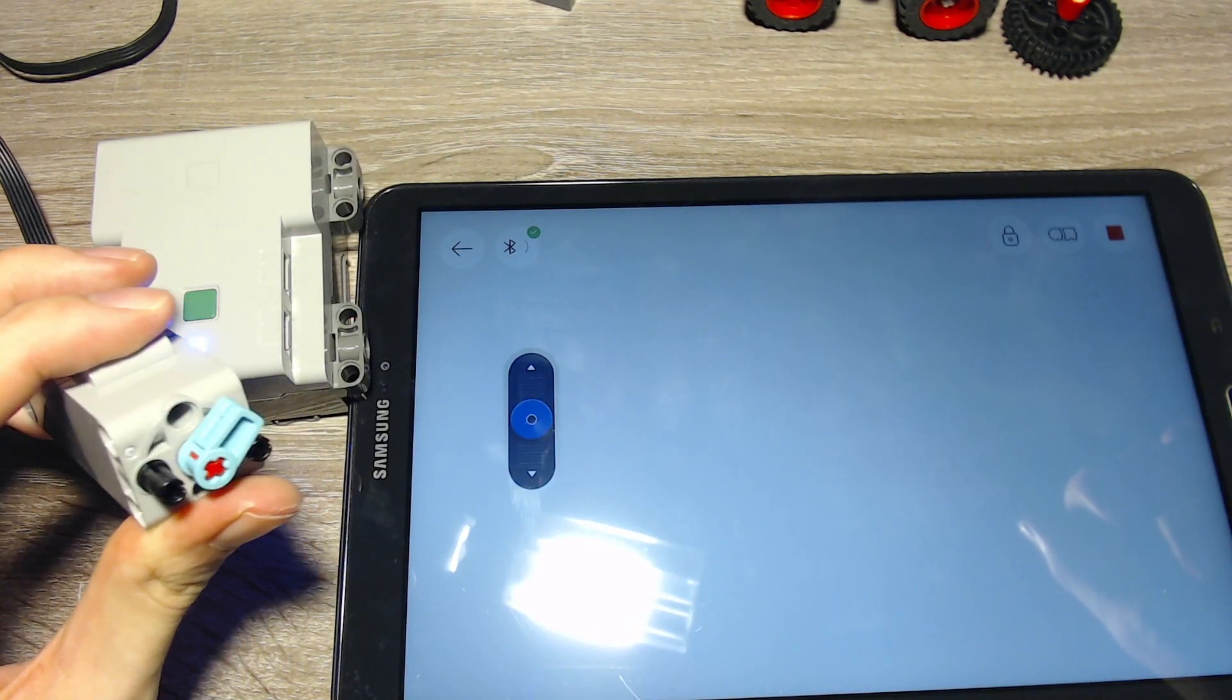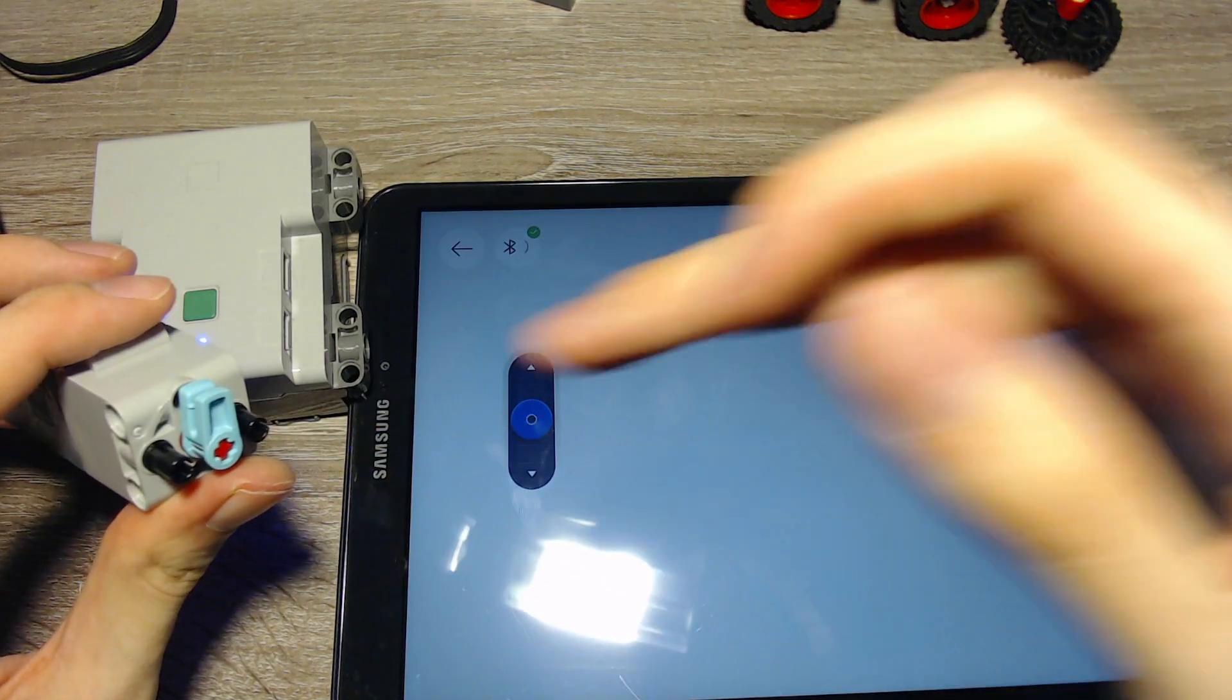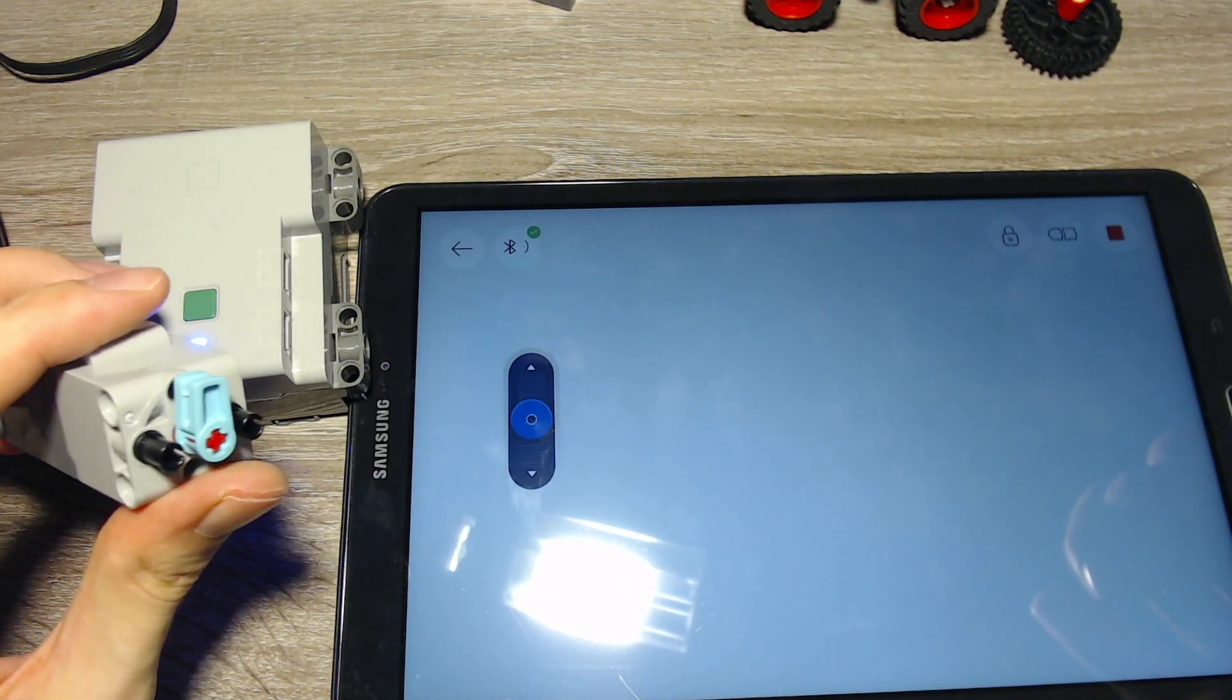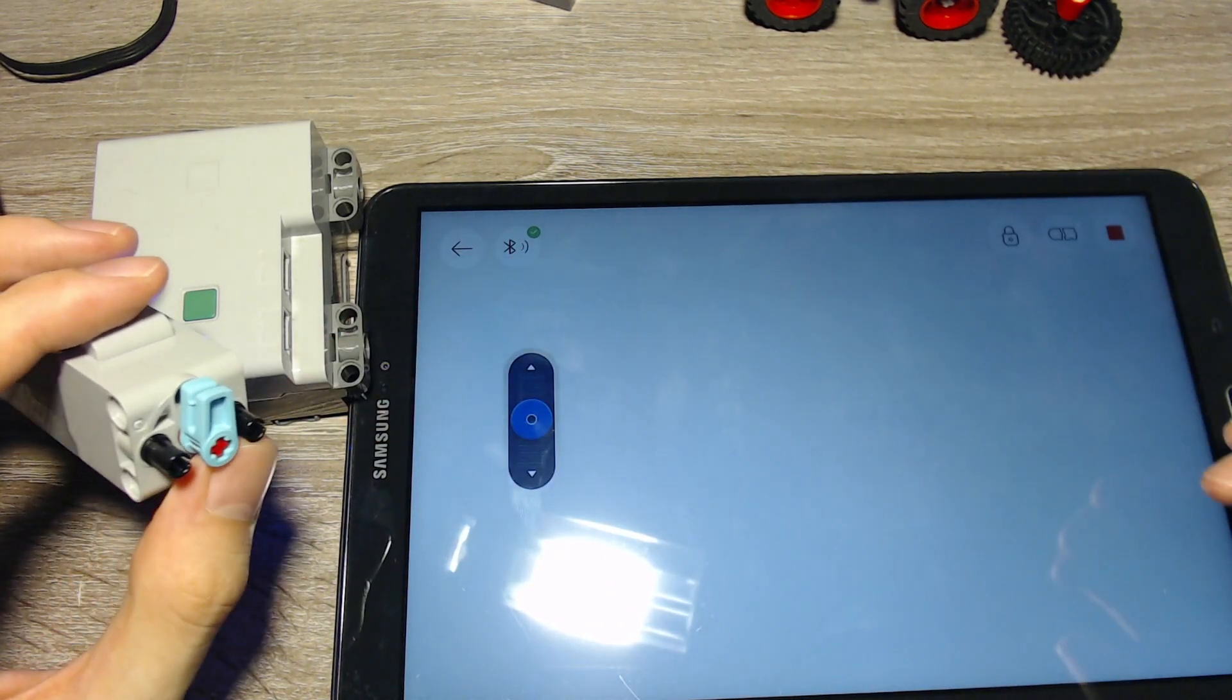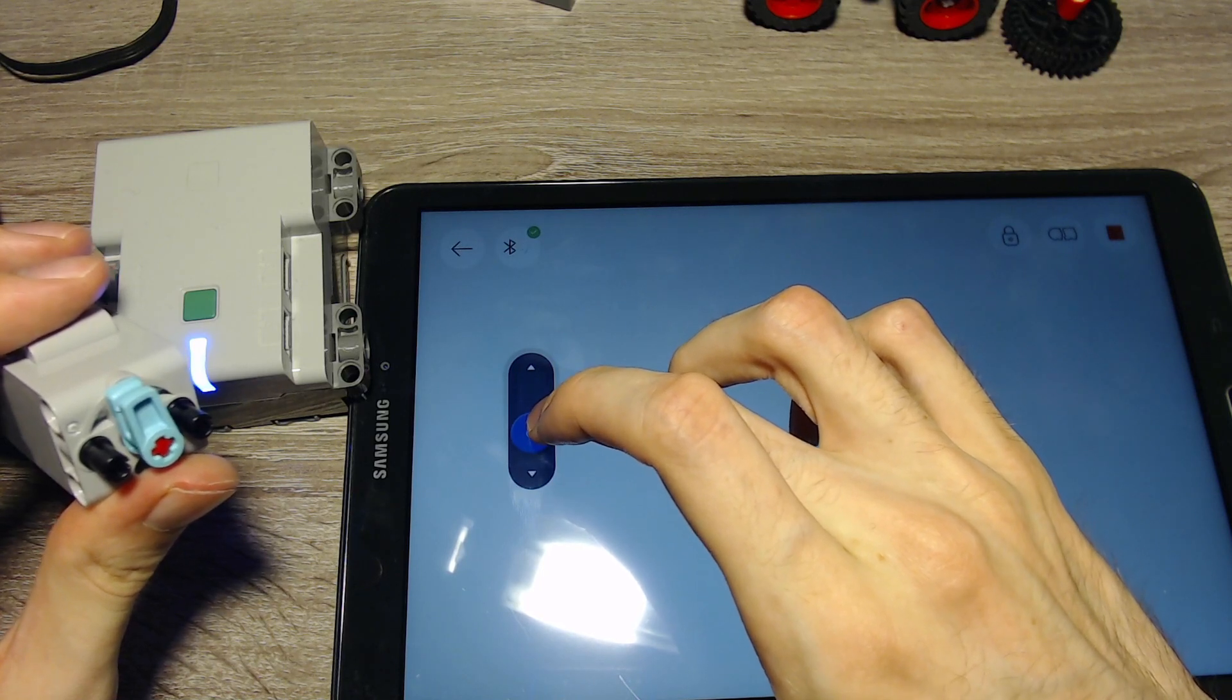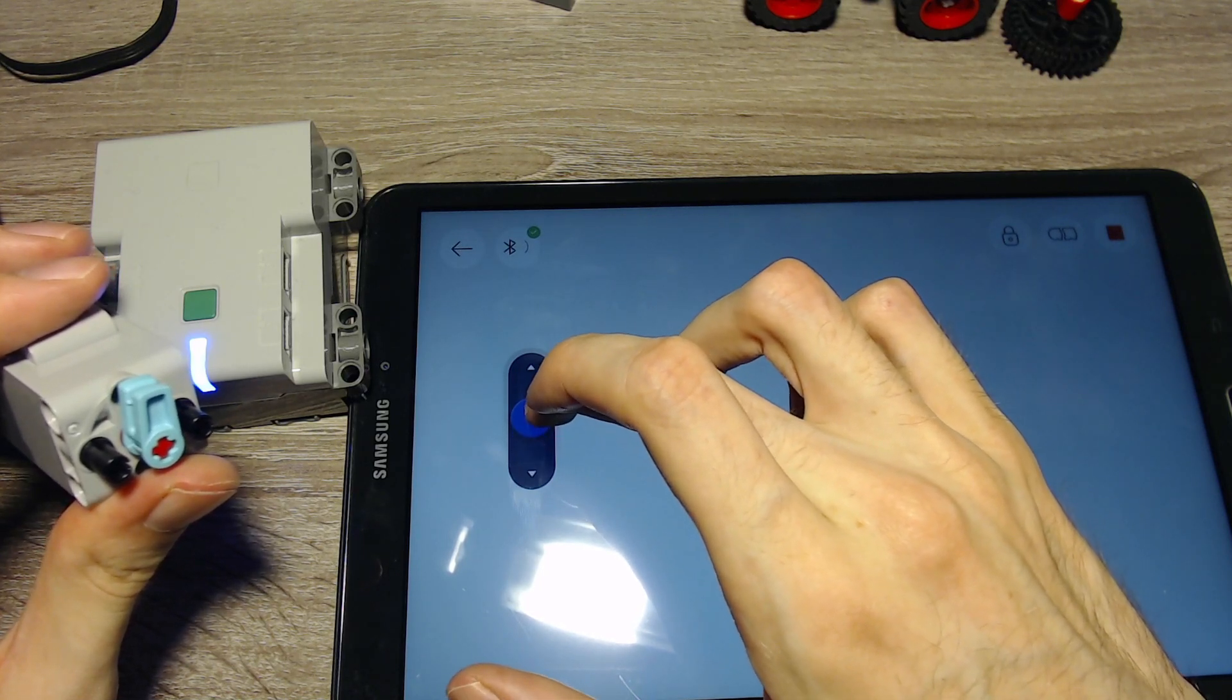It needs an initial calibration to get to the maximum positions, but then it can read its own position, and it can control the position. And you can see that I can move it, and it has many positions in between.